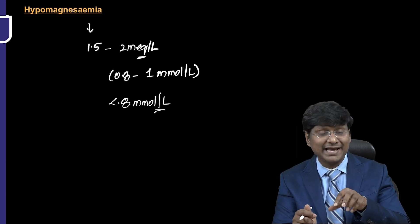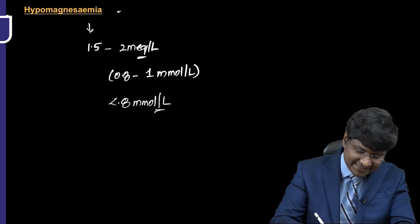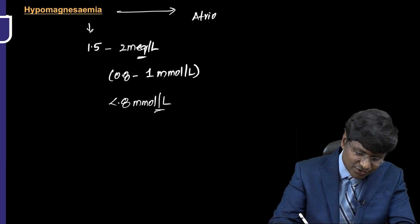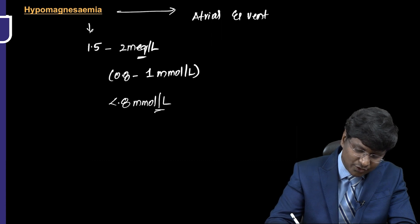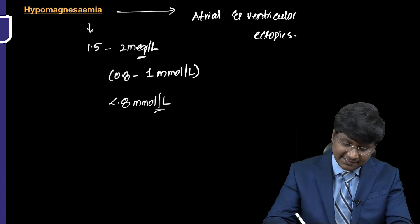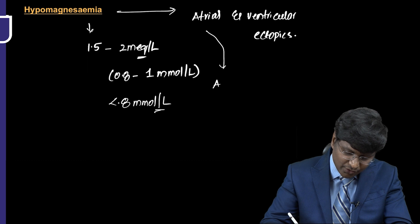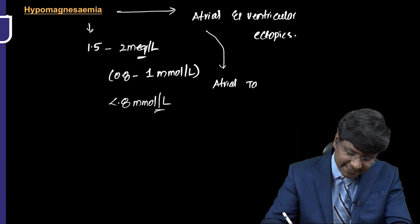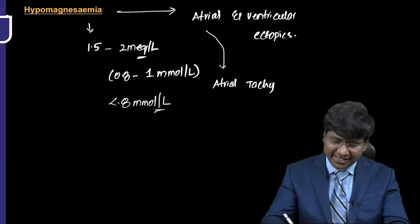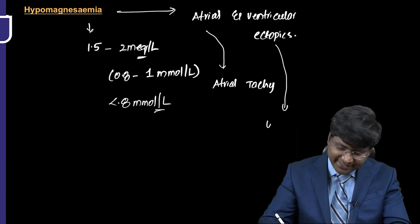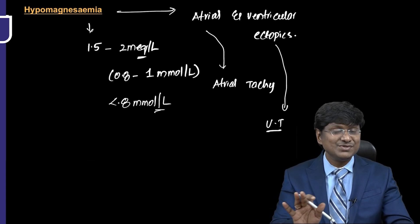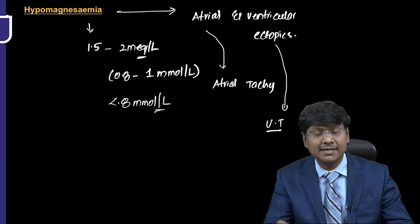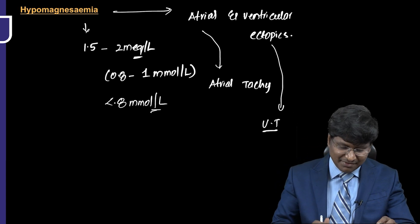In hypomagnesemia, you will not only have QT prolongation — the patient can also develop atrial and ventricular ectopics. These atrial ectopics can progress to atrial tachyarrhythmia, and ventricular ectopics can progress to ventricular tachyarrhythmia or Torsades de Pointes.